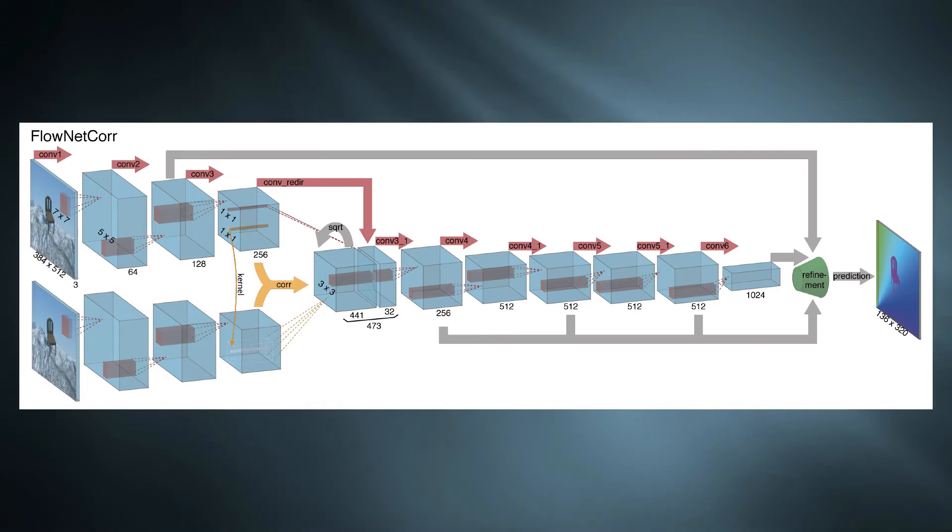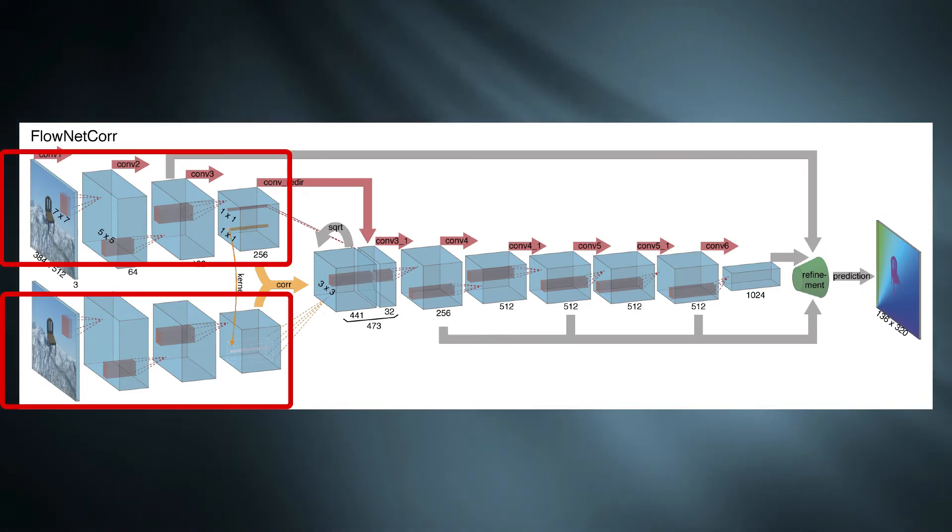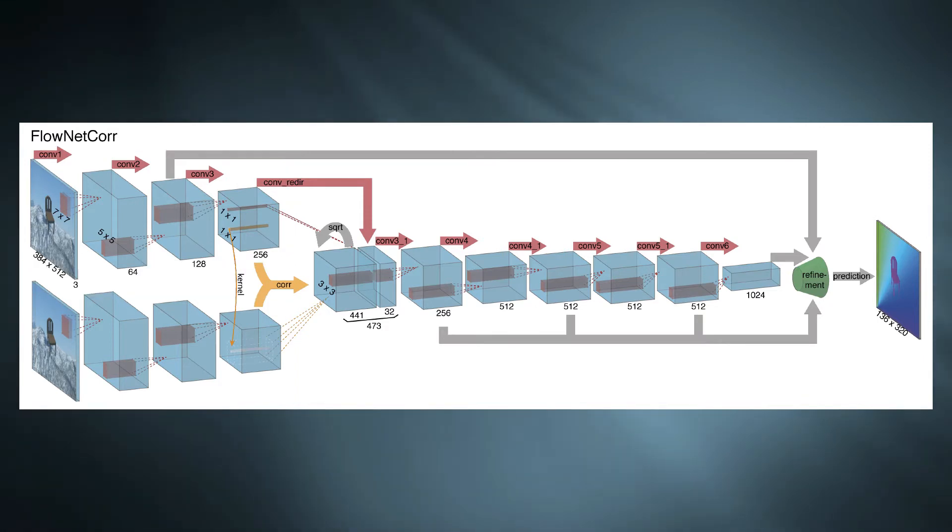In the second architecture, there are two identical separate branches to extract relevant features from each image. At a later point, those features are combined and processed further for flow estimation.